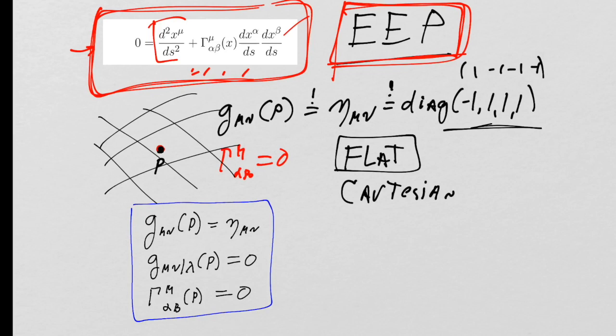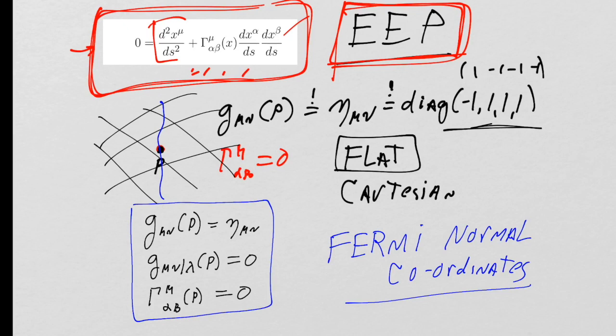So we can add that to our list. Accepting the Einstein Equivalence Principle as an axiom implies that we have a coordinate system where g_{mu nu} equals the Minkowski metric at one point, the connection Christoffel symbols are all zero at that point, and the first derivatives of the metric are necessarily zero. It's worth noting you can even do better — you can find a coordinate system where this is all true along an entire geodesic through P. Those are called Fermi normal coordinates.